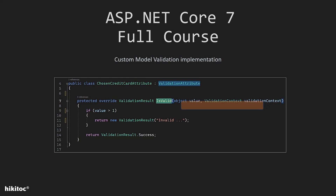This method returns a ValidationResult object, which indicates whether the validation succeeded or failed. In case of success, we typically return ValidationResult.Success. If it fails, we return a ValidationResult with an error message.